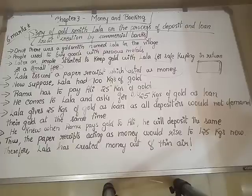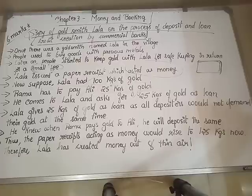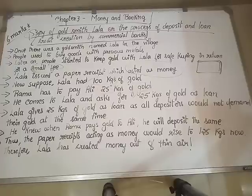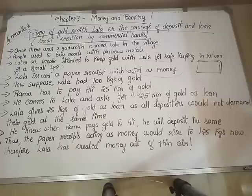Lala has 100 kgs of gold now, and Ramu is asking for 25 kgs as loan. But all depositors — everyone who has deposited gold — would not all come at the same time to take it back in one day. That is true. So Lala thinks: if that is the case, I can give this 25 kgs of gold to Ramu as loan.